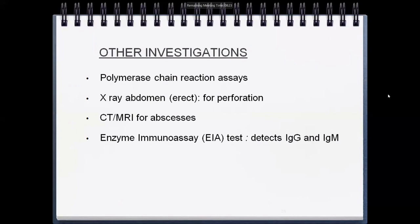Other investigations include PCR for enteric fever (not commonly done), erect X-ray abdomen for perforation, CT/MRI if brain abscesses or space-occupying lesions are suspected, and ELISA to detect IgG and IgM — though still not widely available.